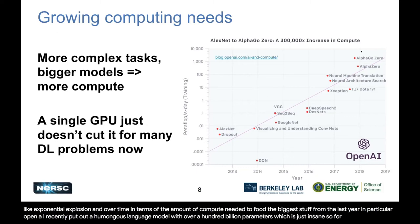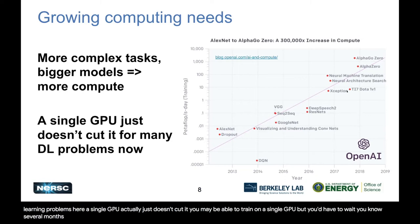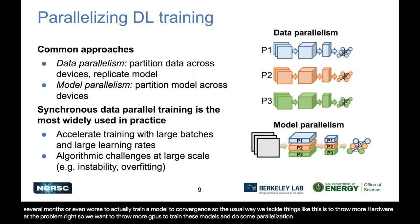For many of these deep learning problems, a single GPU doesn't cut it. You may be able to train on a single GPU, but you'd have to wait several months or even worse to train a model to convergence. The usual way to tackle this is to throw more GPUs at the problem — using more GPUs to train these models with parallelization of the training.